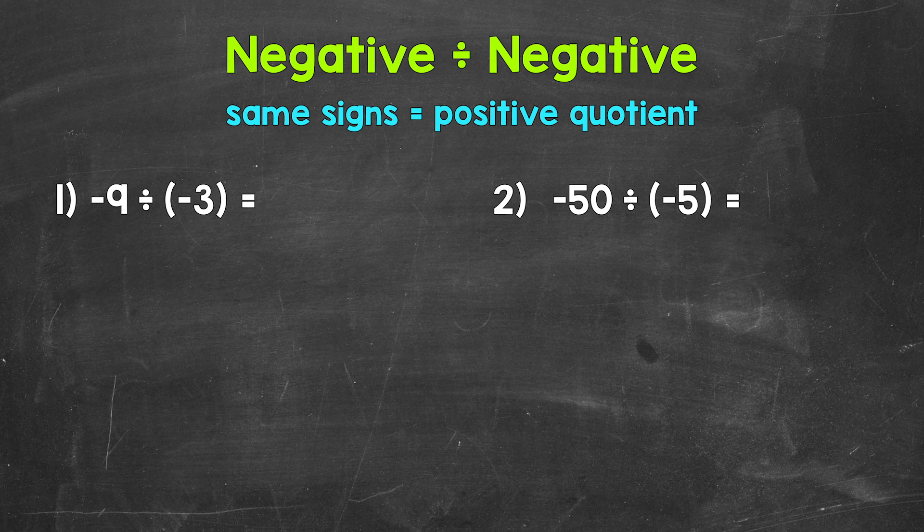Let's jump into number 1, where we have negative 9 divided by negative 3. With this being a negative divided by a negative, we have the same signs. This means our quotient, the answer to a division problem, will be positive. Just like when we multiply integers, having the same signs will equal a positive answer.